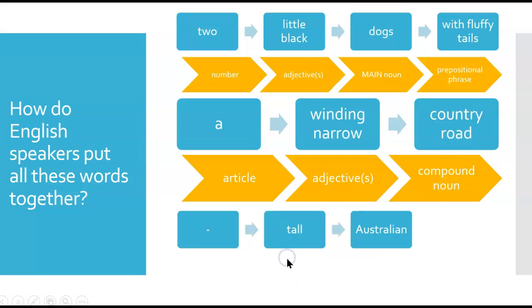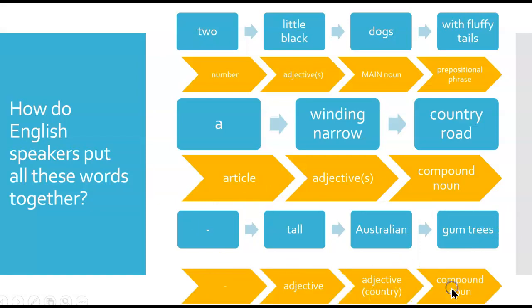Next one was tall Australian gum trees. This one, notice, this is plural. So plural, general, nothing specific, no article. So no article, adjective, a country adjective, and then a compound noun: noun, noun again.